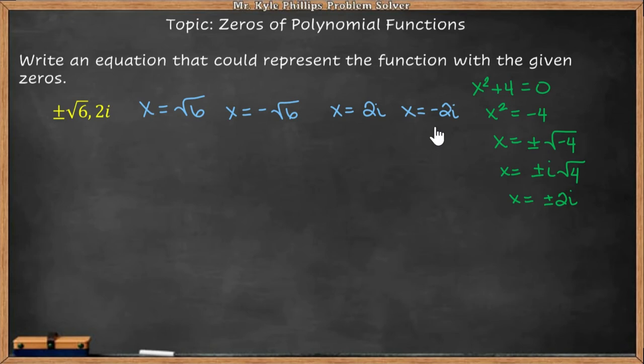So now that we have this, we can create linear factors to establish our polynomial. So we're going to take this square root of six and bring it over here, and that's going to be x minus the square root of six. That's our first factor. The next one will be x plus the square root of six. And then here, this is going to be x minus two i, and we have x plus two i.